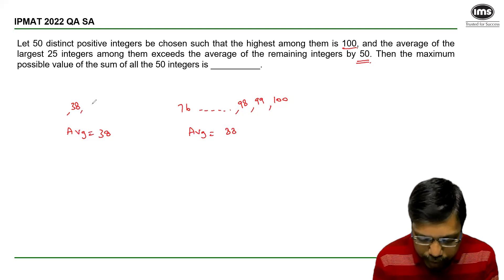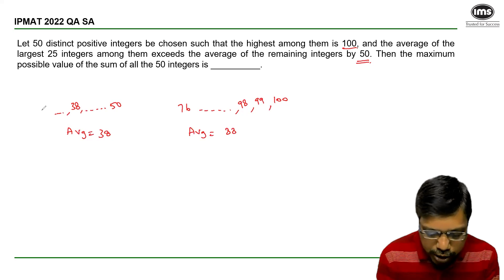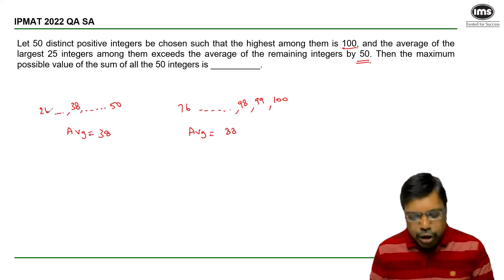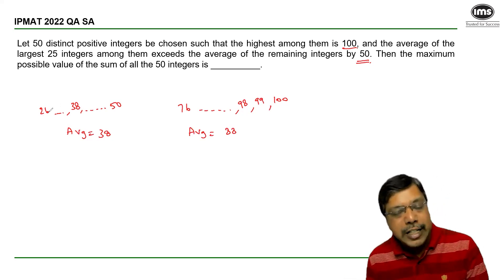Meaning 12 integers after 38 will go on till 50, and 12 integers before 38 will start from 26. Now, the question is: maximum possible value of sum of all 50 integers is?